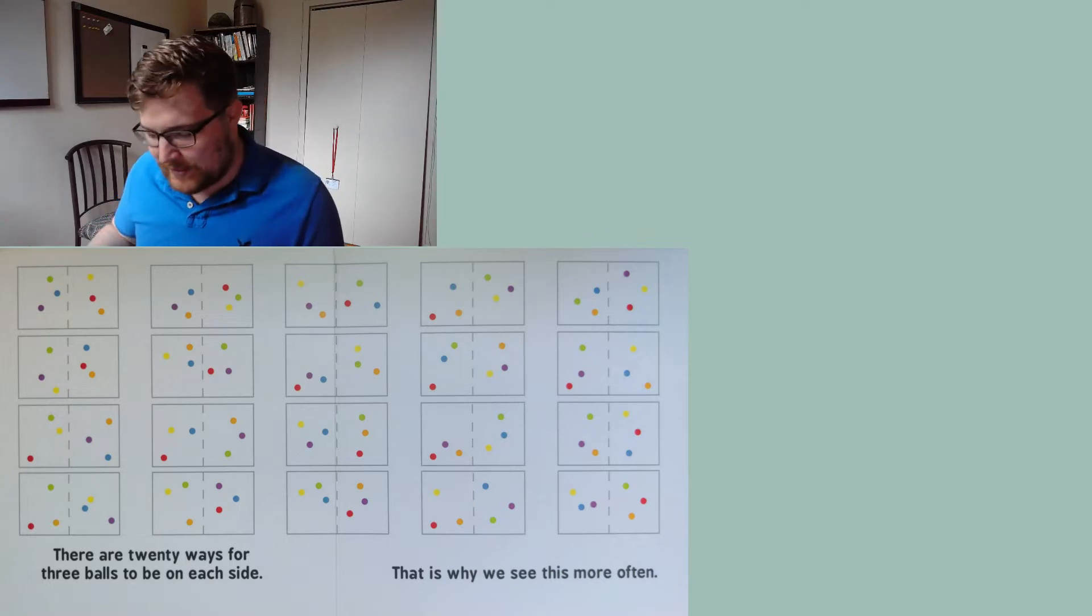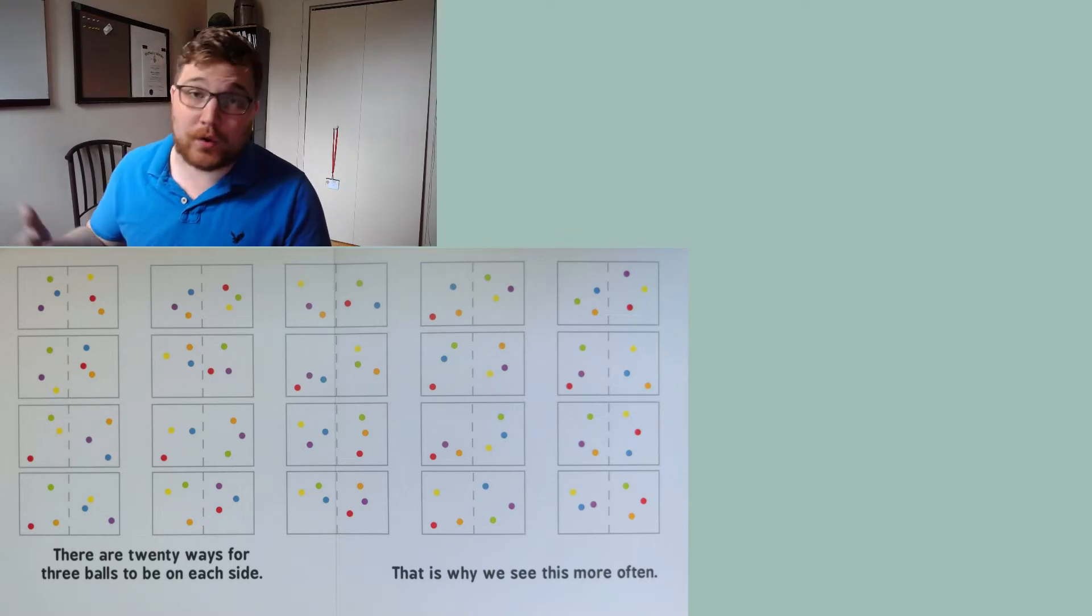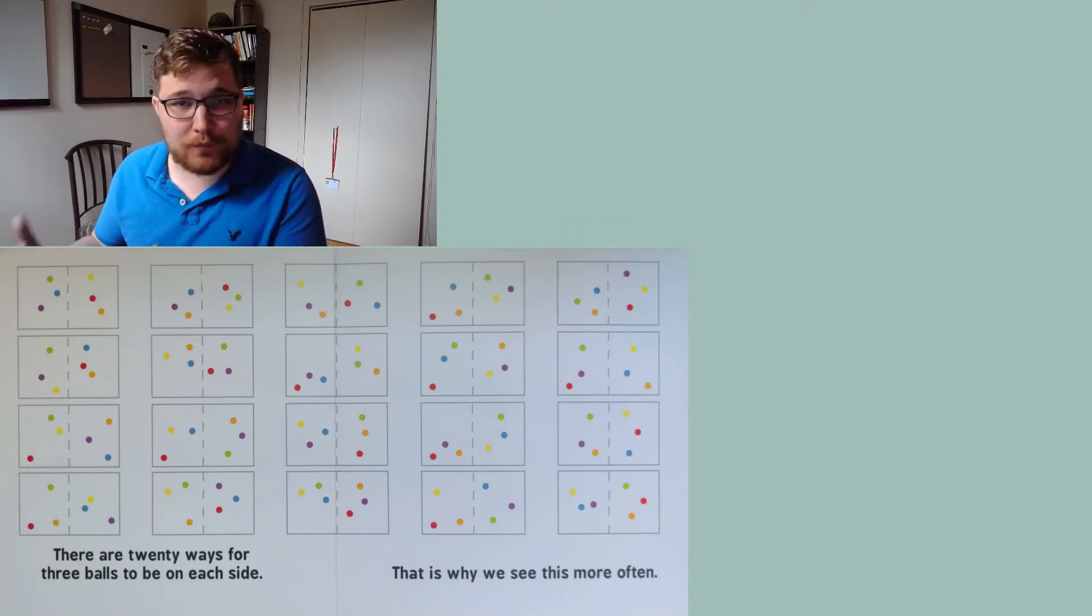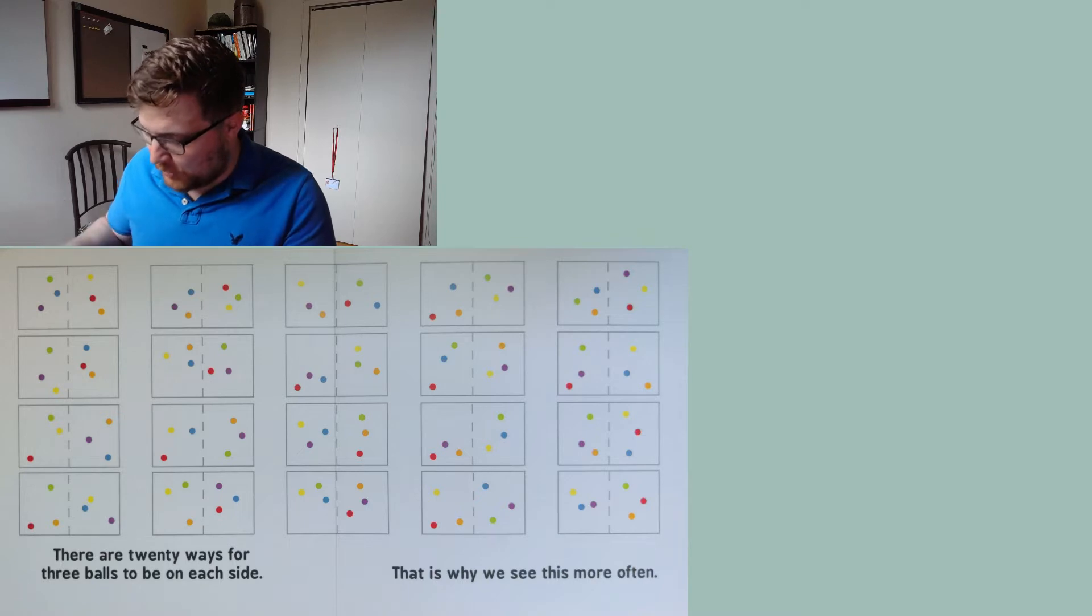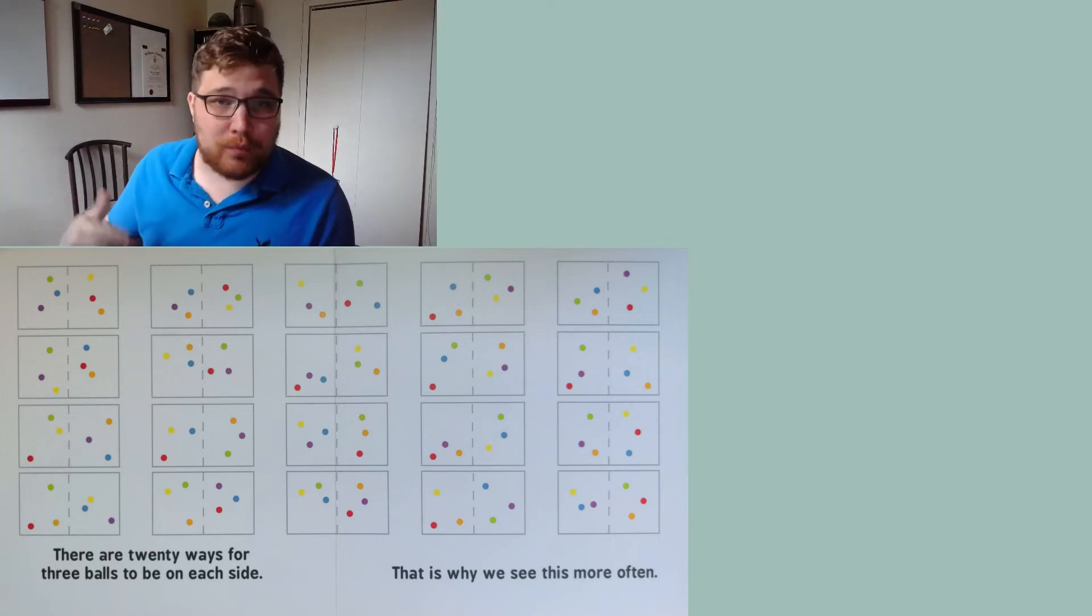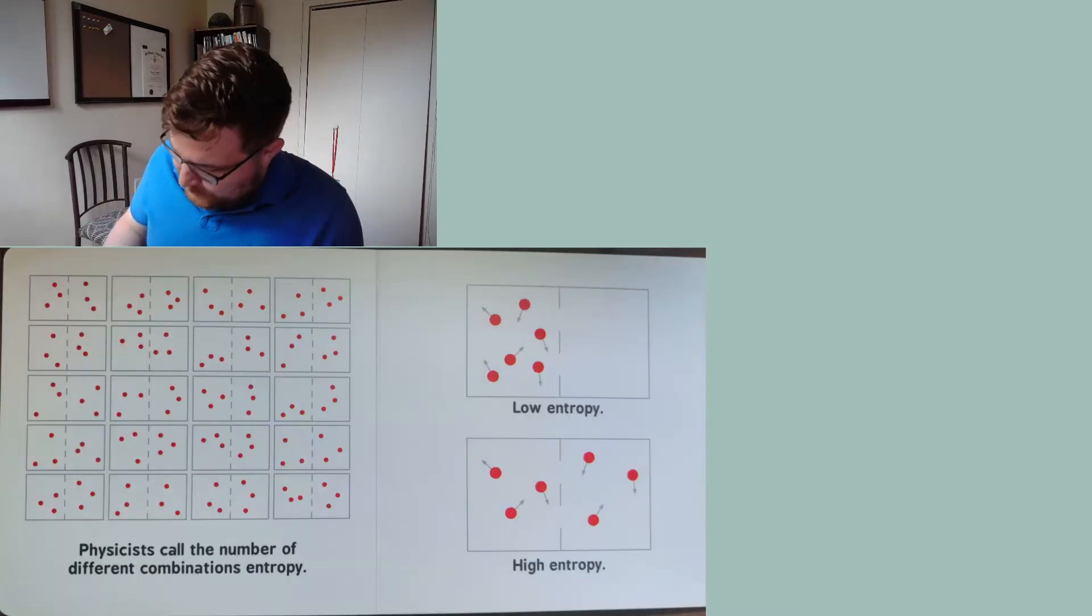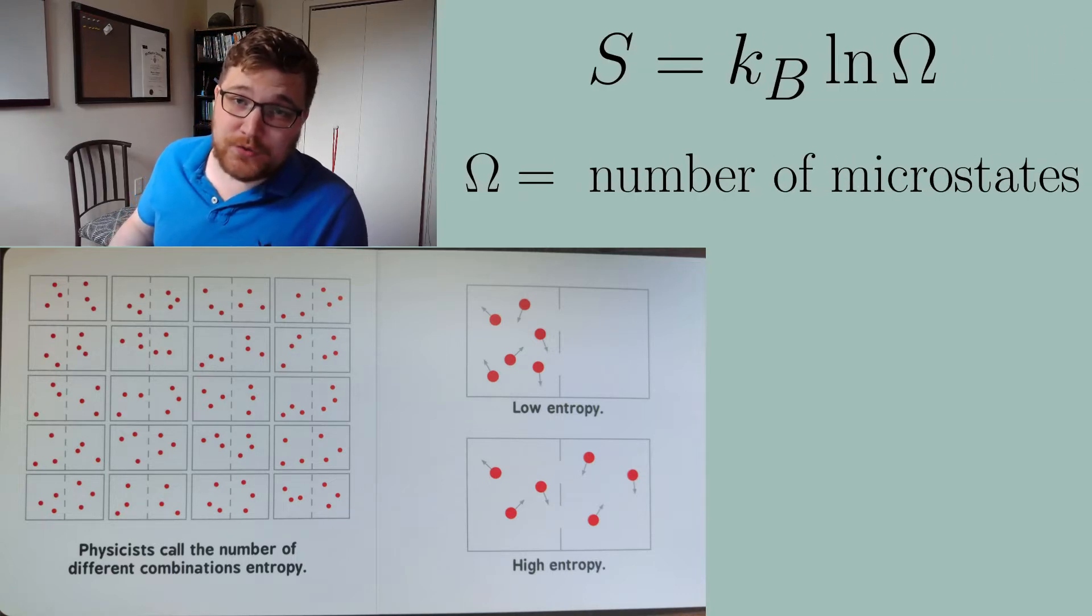That is why we see this more often. So if we're just tracking left and right, just like this says, there are just way more ways for us to have three balls on each side rather than two or one or zero. So this counting problem shows you that there are much more ways for the balls to be distributed evenly. So 20 versus 15 versus six. We've shown that if we're not going to put any restrictions on what these balls are doing, it's just more likely because there are more ways to do it for there to be three balls on each side.